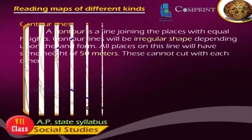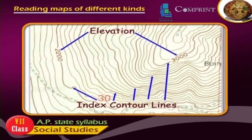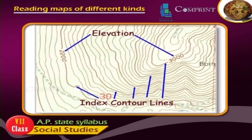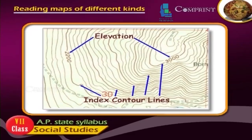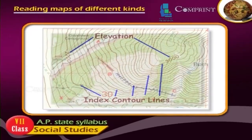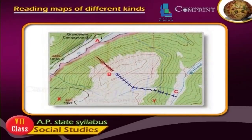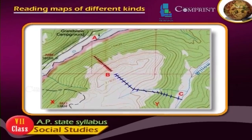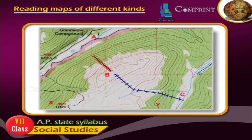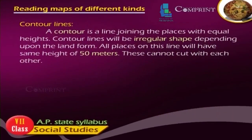Contour lines: a contour is a line joining the places with equal heights. Contour lines will be an irregular shape depending upon the landform. All places on this land will have the same height of 50m. These cannot cut with each other.